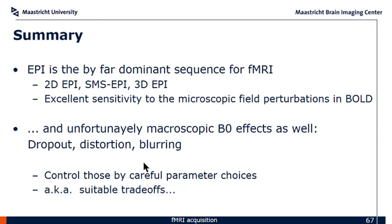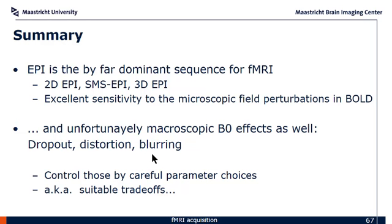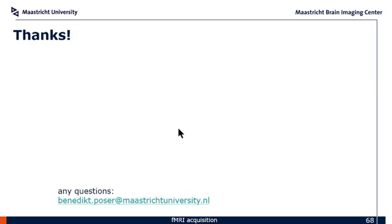In summary: EPI is the by-far dominant sequence for fMRI, with 2D EPI, multiband EPI (probably the new standard), and 3D EPI (more popular for high-resolution and high-field work). fMRI with EPI can give excellent sensitivity to the microscopic field perturbations you're after when measuring BOLD, but it's also very sensitive to macroscopic B0 effects — dropout, distortion, blurring, and so forth. You need to control for those through careful parameter choices and trade-offs. There's no free lunch in MRI — you always have to find some compromise that works best for your application.